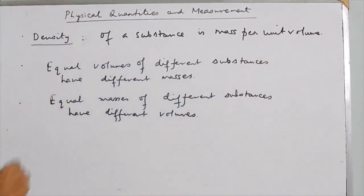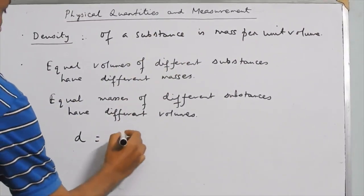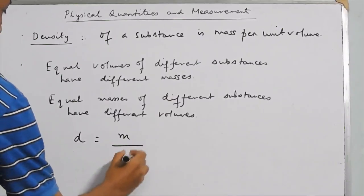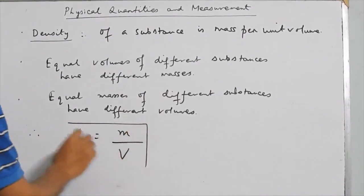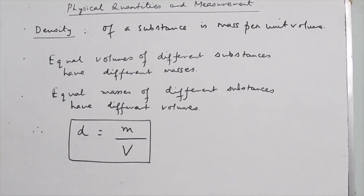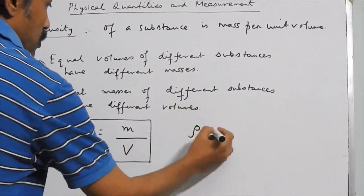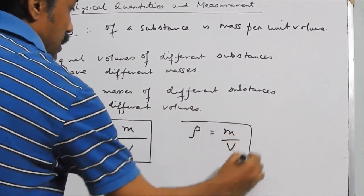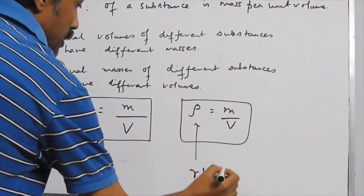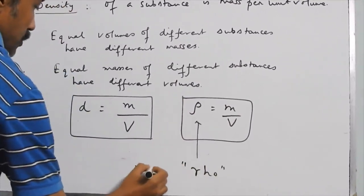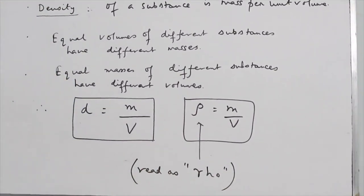If we denote density by D and the mass of the substance by M and volume by V, then D = M/V. In some books, instead of using the letter D, we use the symbol rho — a Greek letter pronounced as 'rho' — to denote density as mass by volume.